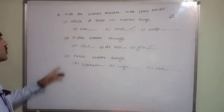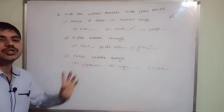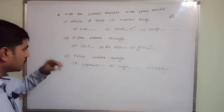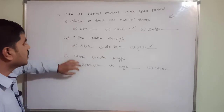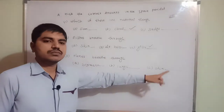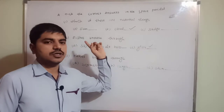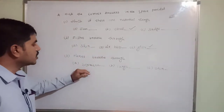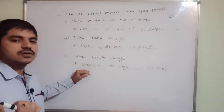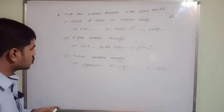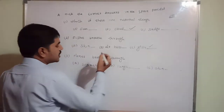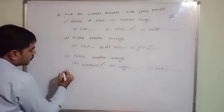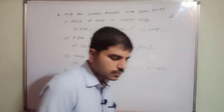The third question: plants breathe through what? Either stomata, lungs, or skin. Skin is used by frogs; lungs are used by human beings. Stomata is not present in humans or frogs - stomata is present in plants only. That's why plants breathe through stomata. Clear?